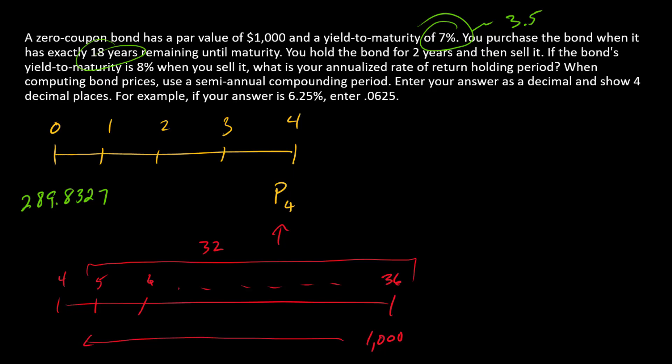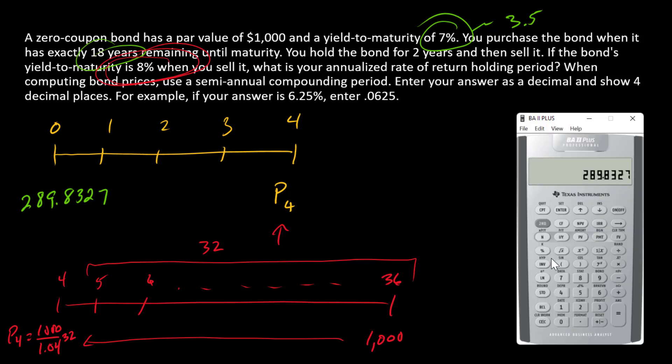To calculate P4, we just need to come back 32 periods. P4 equals $1,000 divided by 1 plus a new yield to maturity. The yield to maturity at the time the bond is sold is 8%, so we're going to have 1.04 in the denominator raised to the 32nd power. $1,000 divided by 1.04 raised to the 32nd power equals $285.0579.